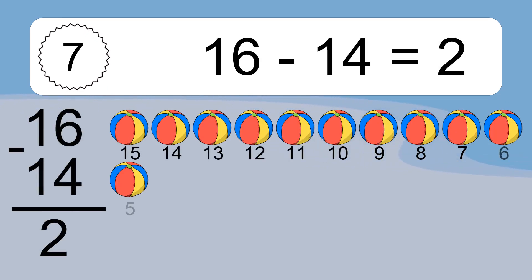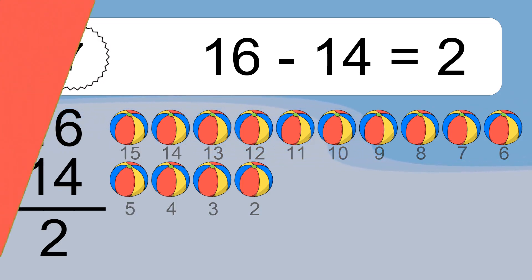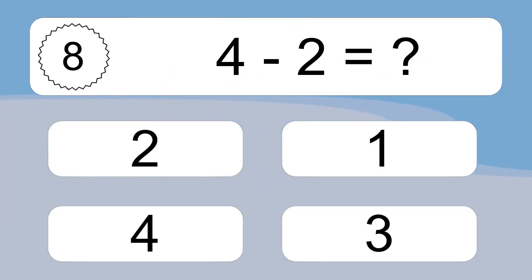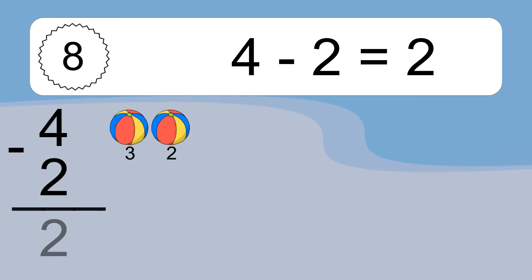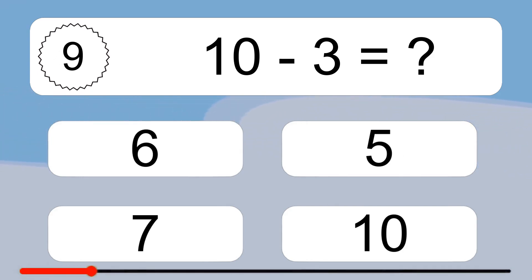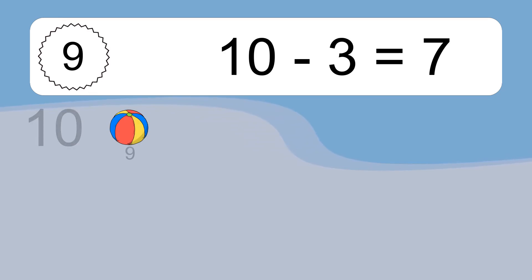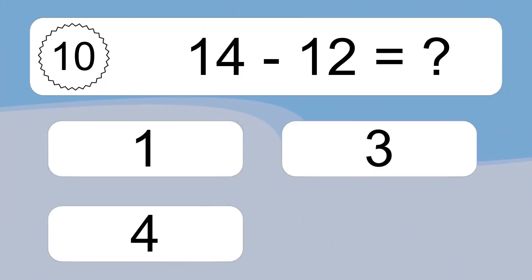16 minus 14 equals 2. Let's count it: 15, 14, 13, 12, 11, 10, 9, 8, 7, 6, 5, 4, 3, 2. 4 minus 2 equals what? 4 minus 2 equals 2. Let's count it: 3, 2. 10 minus 3 equals what?